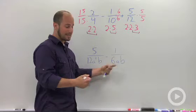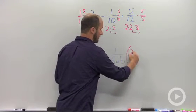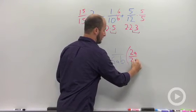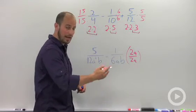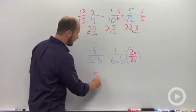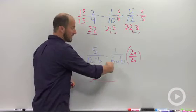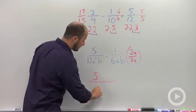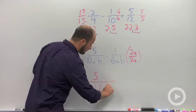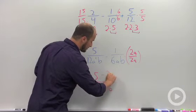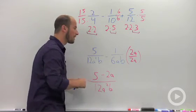So to make that out of this term, we need to multiply this by 2a over 2a, leaving me with 5. Once my denominators are the same, we can just subtract as normal. So we get 12 over 12a squared b minus 2a.